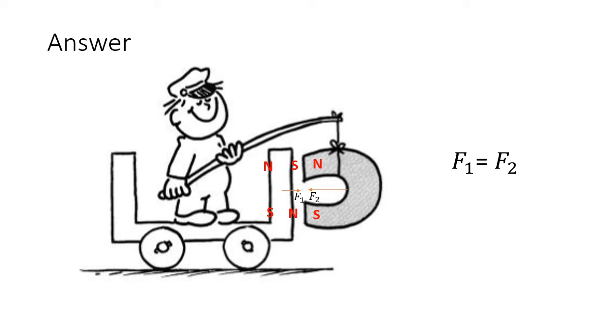Also, we can explain this problem in another way. These two forces, F1 and F2, are internal force pairs of this car-magnet system. If I consider this force F1, it is an external force to this car, but it is not an external force to this system.